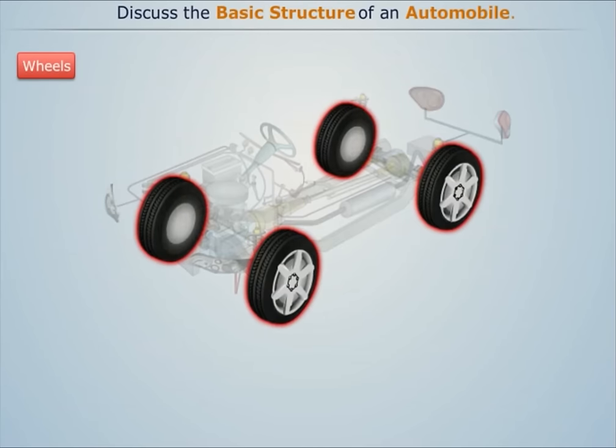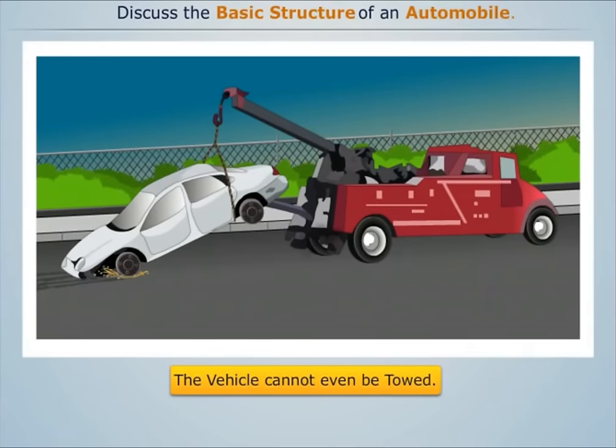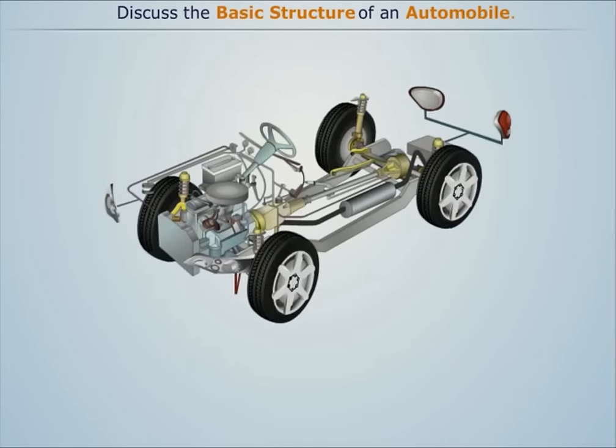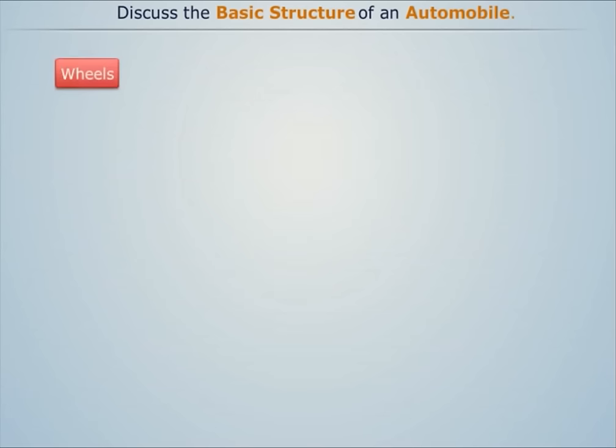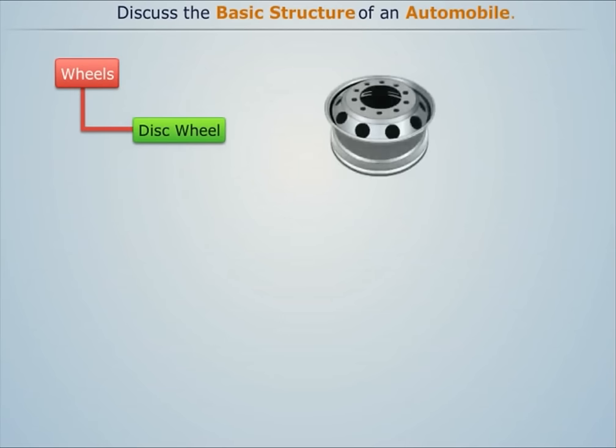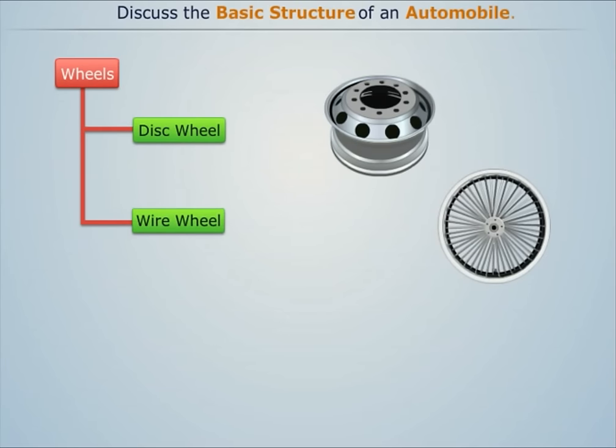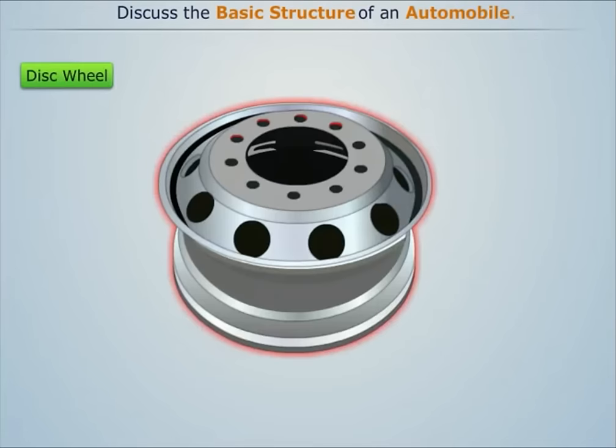Wheels are one of the most important parts of an automobile. Without wheels, the vehicle cannot even be towed. Wheels carry the entire weight of a vehicle. There are three types of wheels: disc wheels, wire wheels, and alloy wheels. Amongst them, disc wheels are the most commonly used.